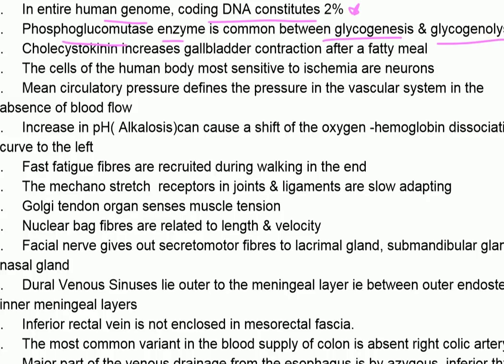Cholecystokinin increases gallbladder contraction after a fatty meal. The cells of the human body most sensitive to ischemia are neurons.